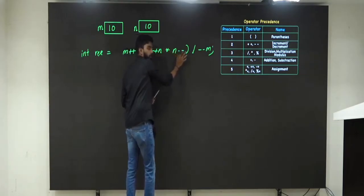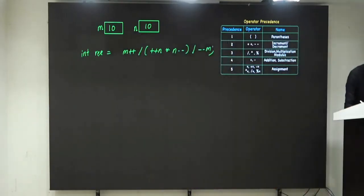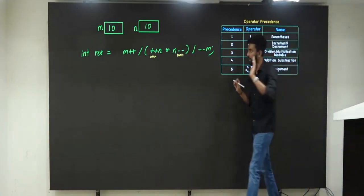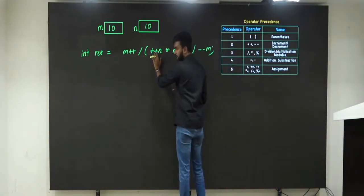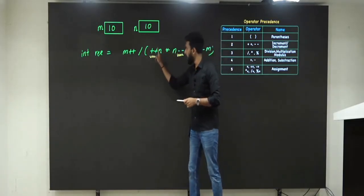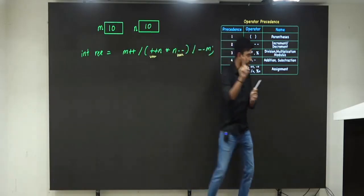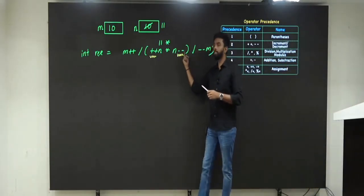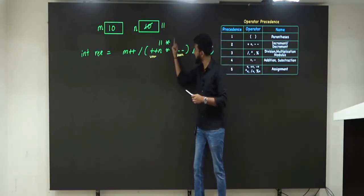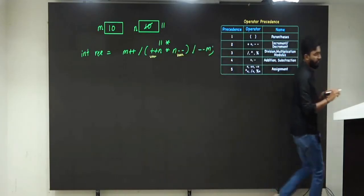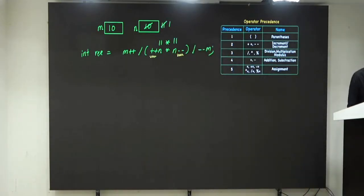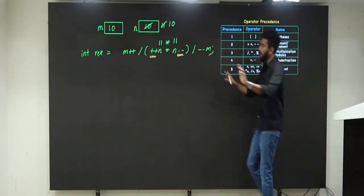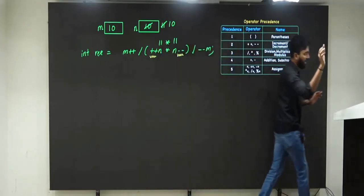Now left to right. Plus-plus is there — incrementation. Minus-minus — decrementation. Incrementation: pre or post? Pre — ++n — which means first increment, then use. So n becomes 11, then we use 11. Then n-- decrementation — post — first use 11, then decrement to 10. So inside the parenthesis: 11 × 11 = 121.